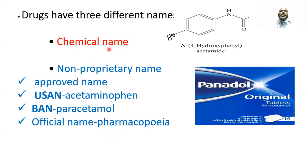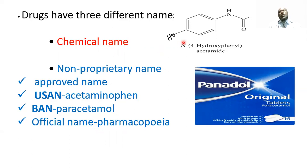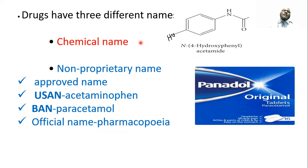The chemical name is a long name given according to the International Union of Pure and Applied Chemists (IUPAC). For example, paracetamol's chemical name is N-(4-hydroxyphenyl)acetamide.